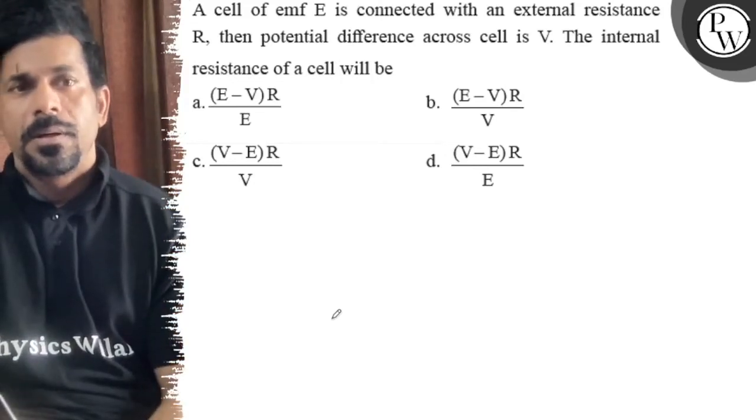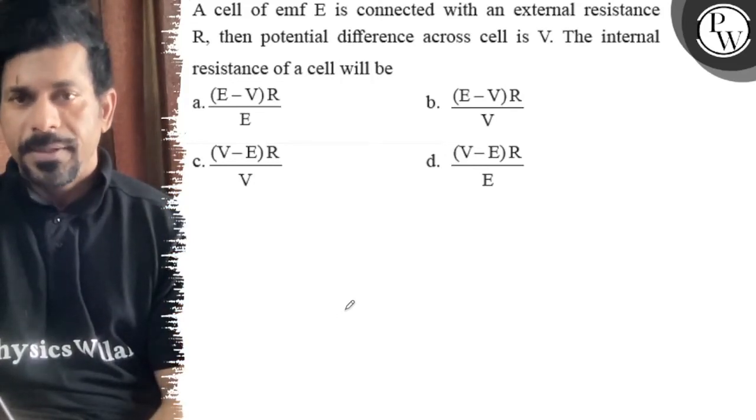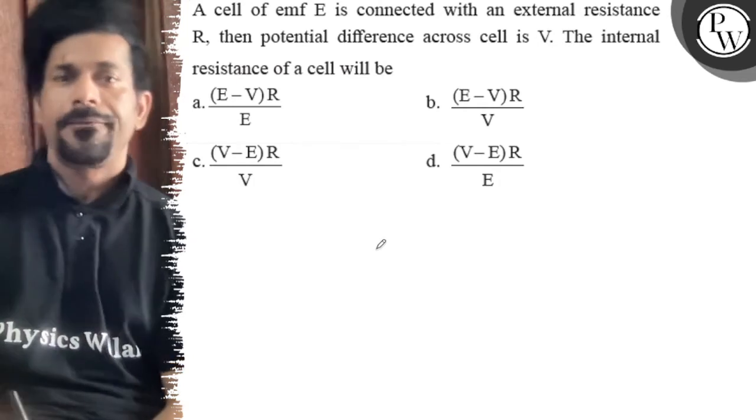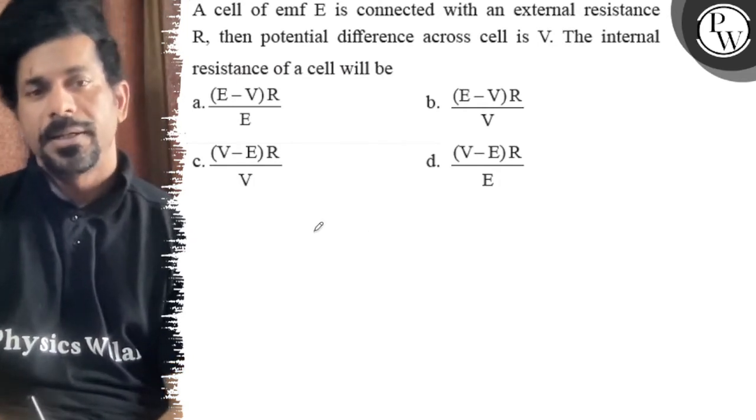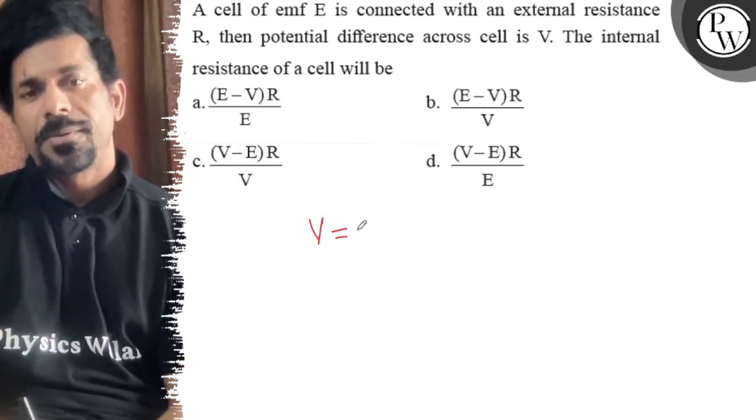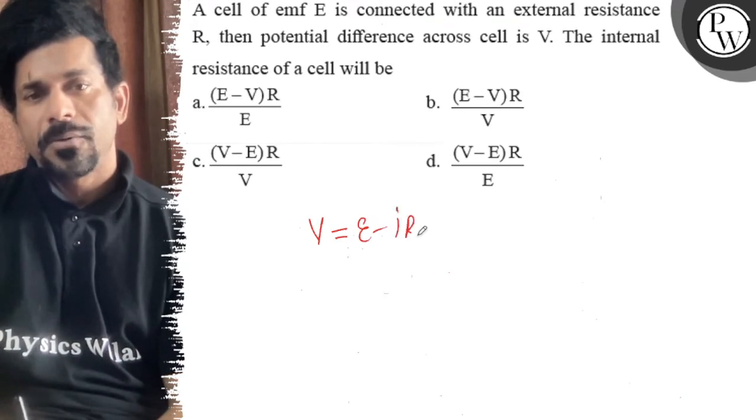Hello, let's see the question. A cell of emf E is connected with an external resistance R, then the potential difference across the cell is V. The internal resistance potential drop is V is equal to E minus IR.